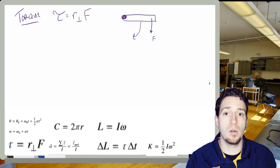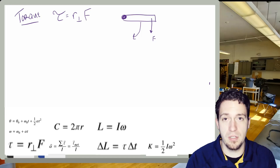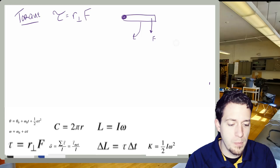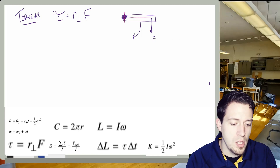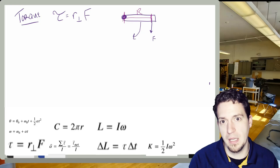If I want more torque, I can change R or I can also change F. In this diagram, R would be from the axis of rotation to where the force is actually being applied.